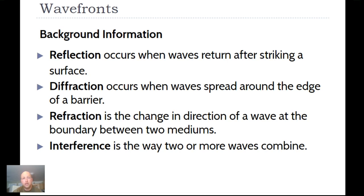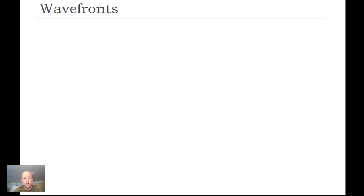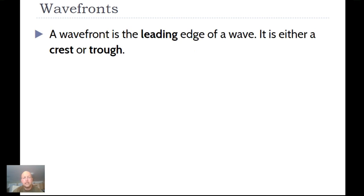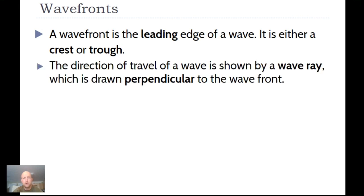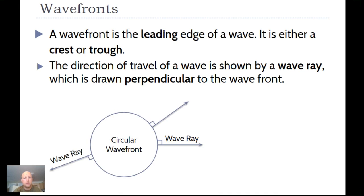We will see a little bit of diffraction in a couple of the diagrams that follow. The wavefront is the leading edge of a wave and can be either a crest or a trough. The direction of travel is shown by a wave ray, which is always at a 90-degree angle — perpendicular — to the wavefront. For a circular wavefront, the wave rays travel outwards from the center, each one perpendicular to the wavefront.